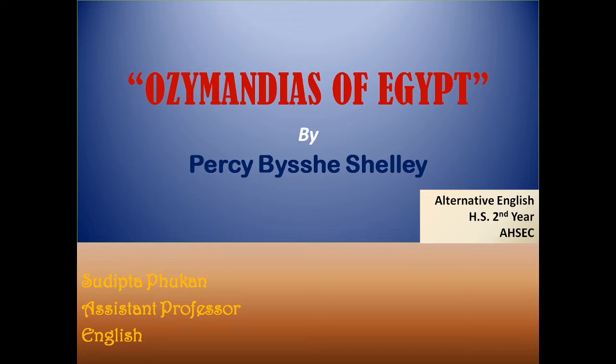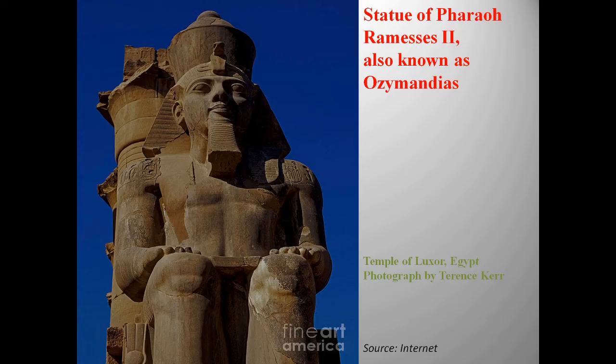The name of the poem is Ozymandias of Egypt, composed by Percy Bysshe Shelley. Before starting the poem, let's learn about the person Ozymandias. This is the statue of Pharaoh Ramesses II, also known as Ozymandias, available at the Temple of Luxor, Egypt, about whom we are going to read in the poem.